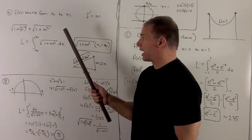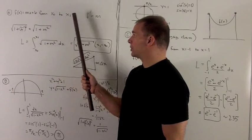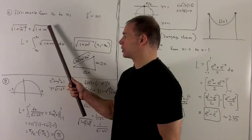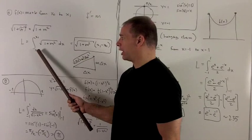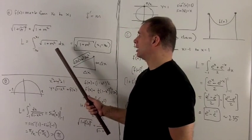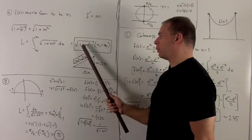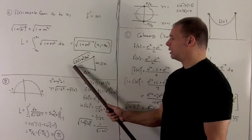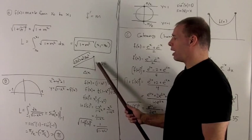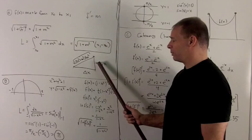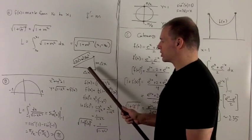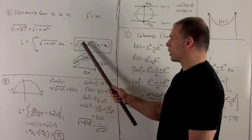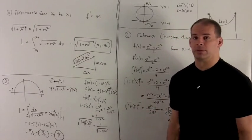First example: a straight line segment y equals mx plus b from x0 to x1. The derivative is just m, so the radical of 1 plus the derivative squared is the radical of 1 plus m squared. The length is the integral from x0 to x1 of radical 1 plus m squared dx, and since that's a constant, we get radical 1 plus m squared times (x1 minus x0). This agrees with the Pythagorean theorem: going over by delta x and up by m delta x gives a hypotenuse of radical 1 plus m squared times delta x. The simplest case works out.